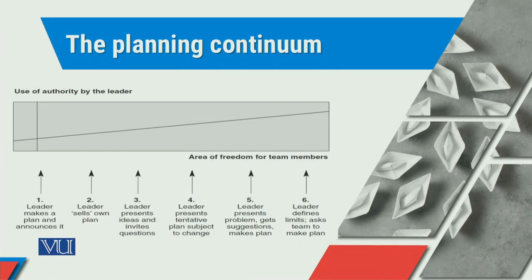Isi tarha, agar hain aap planning continuum develop karayin related to the leadership perspective, to we can associate our leadership concern with the freedom of the team members. Agar hain iske sab se lower dherje ko dhekhain, which is level one, to yeh hain par leader makes a plan and announces it — yeh hain par sari responsibility leader ki hai. Jab ki agar hain is continuum mein move karayin, aur hum loogun ko free will dheni shuruo karayin, is surat mein, ki they are also ready and also able to perform the phenomena, to us surat mein the next step would be that the leader sells own plan.